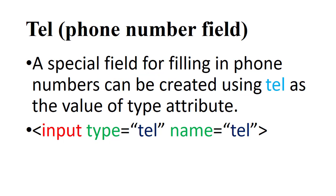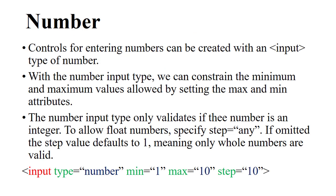The third input type is 'tel', or the telephone number field. A special field for filling in phone numbers can be created using 'tel' as the value of the type attribute. The syntax is: input type equals 'tel', name equals 'tel'.